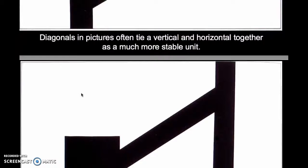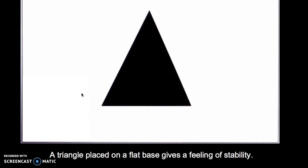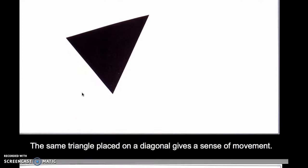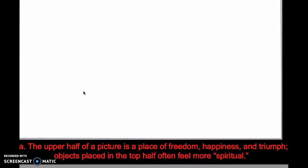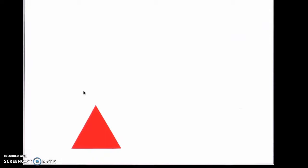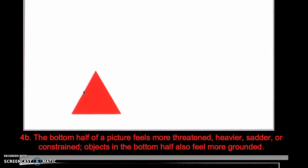Mountain slides, waves — all of these are diagonals in movement or tension. A triangle placed on a flat base gives a feeling of stability. However, the same triangle placed on a diagonal gives a sense of great movement. Bang claims that the upper half of a picture is the place of freedom, happiness, and triumph — objects placed in the top half often feel more spiritual. On the other hand, the bottom half of the picture feels more threatened, heavier, sadder, and constrained. Objects in the bottom half also feel more grounded.